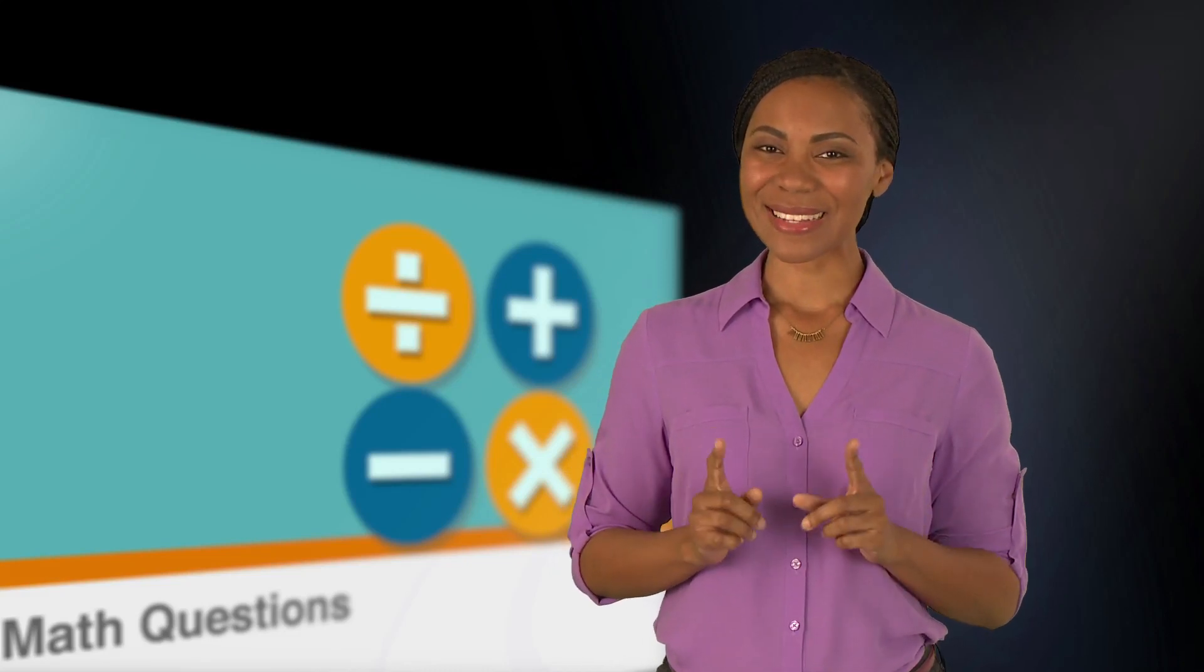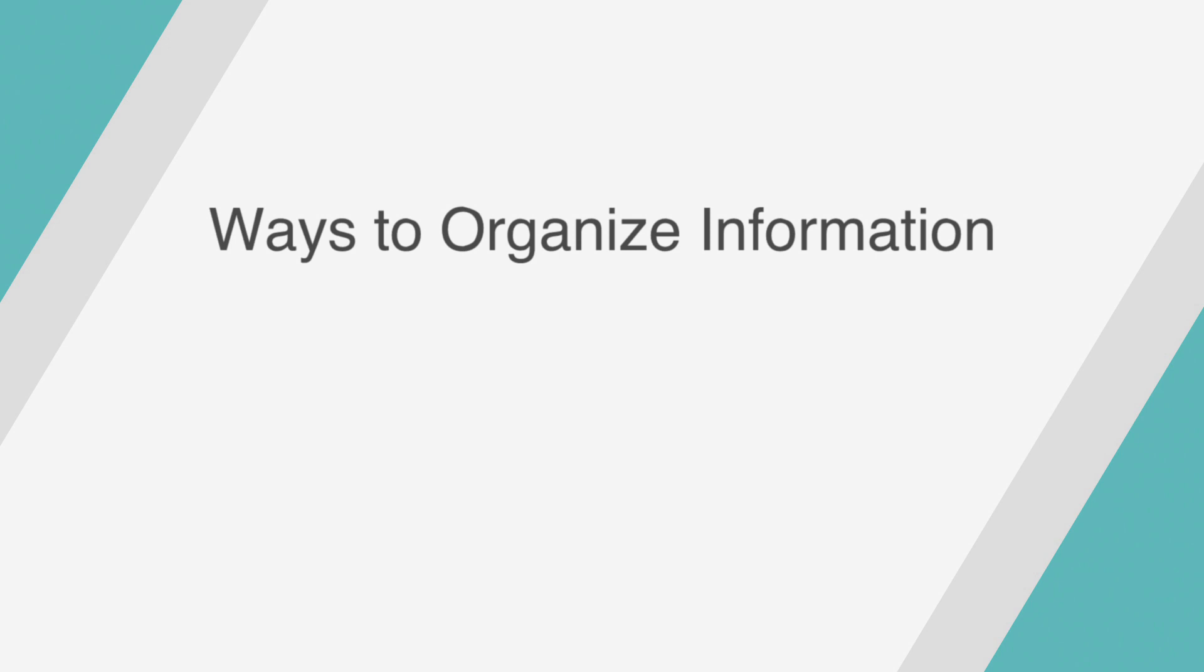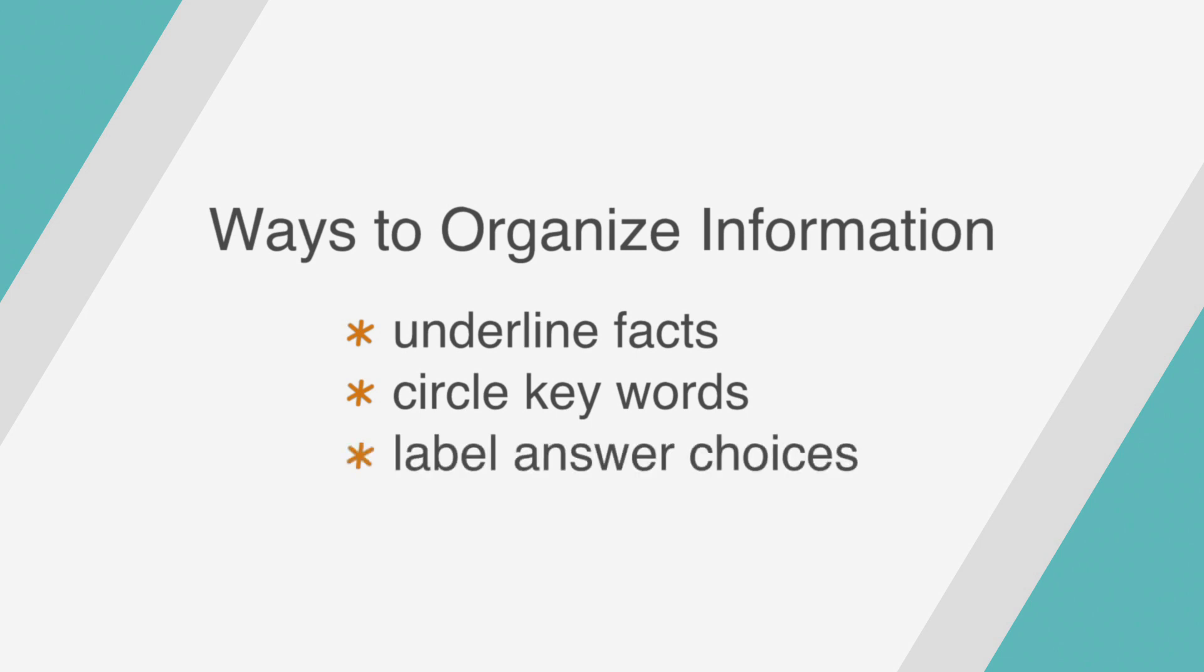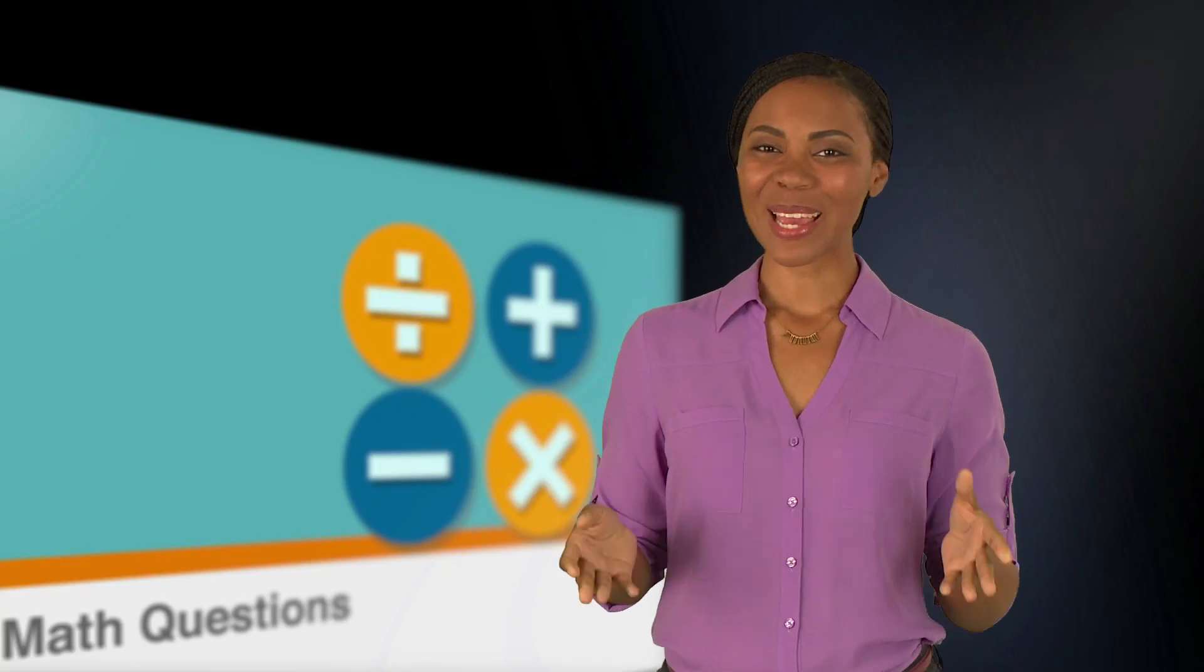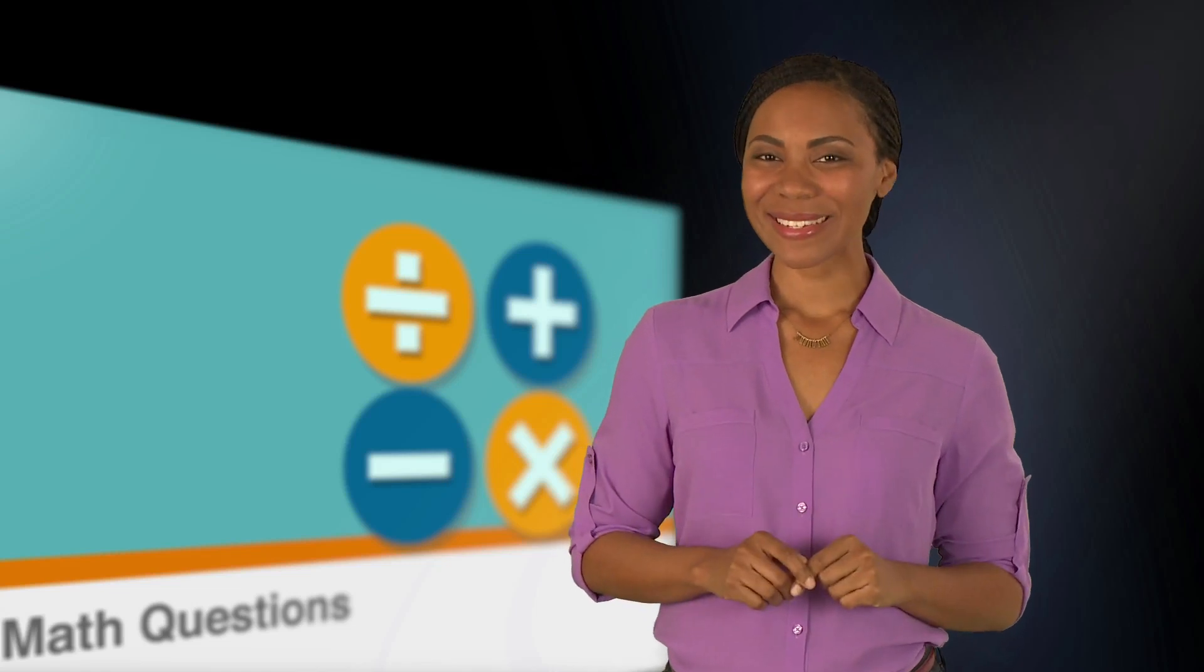With that in mind, let's attack our problems with three ways to organize information. Underline the facts, circle the keywords, and label the answer choices. Underlining, circling, and labeling. It's probably a good time to remind you that you can write in your test booklet. Let's put this strategy to use in a problem about three tail-wagging dogs.